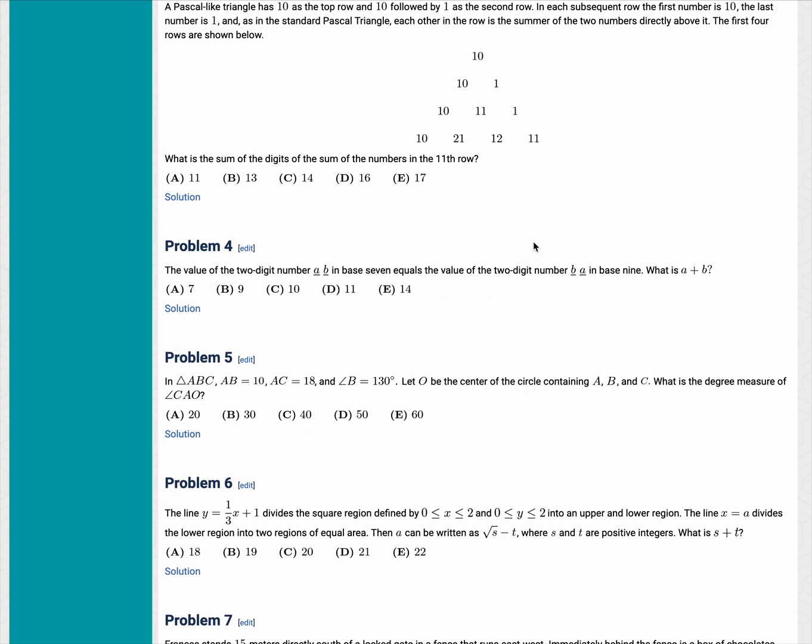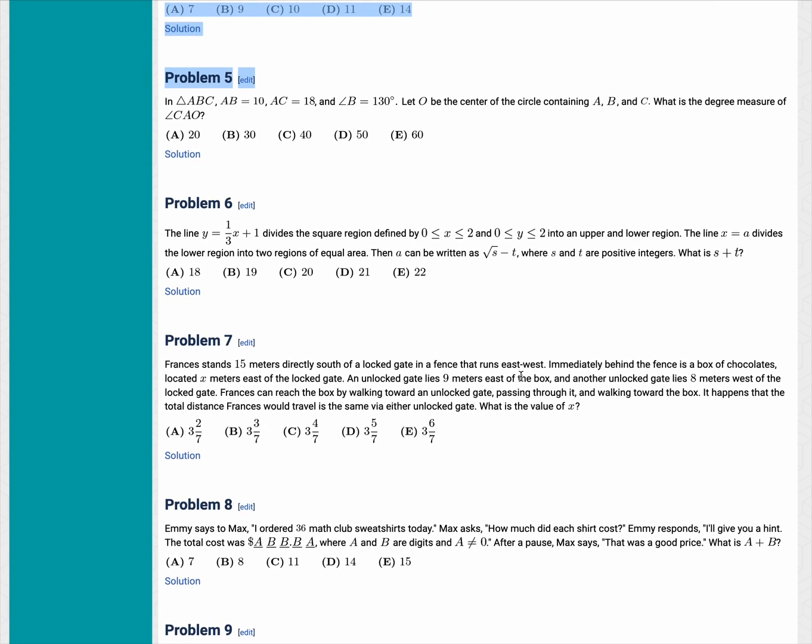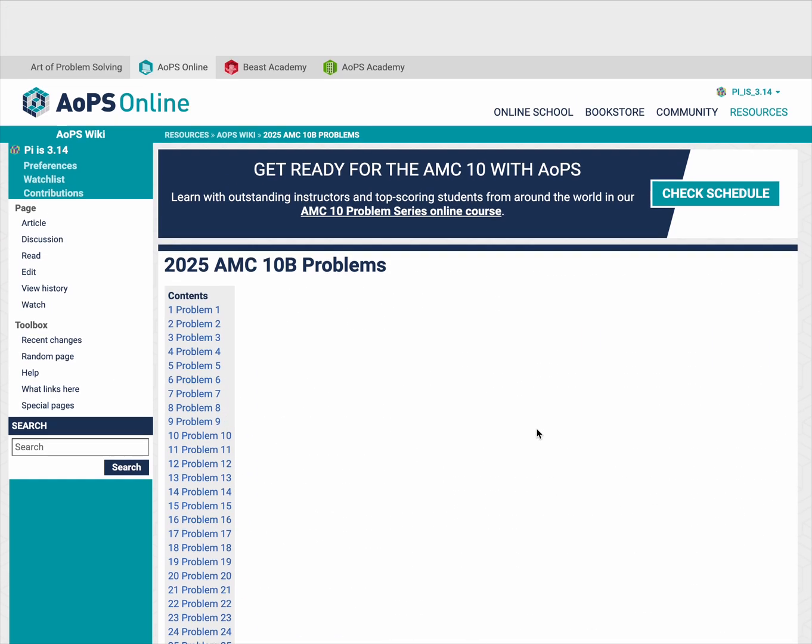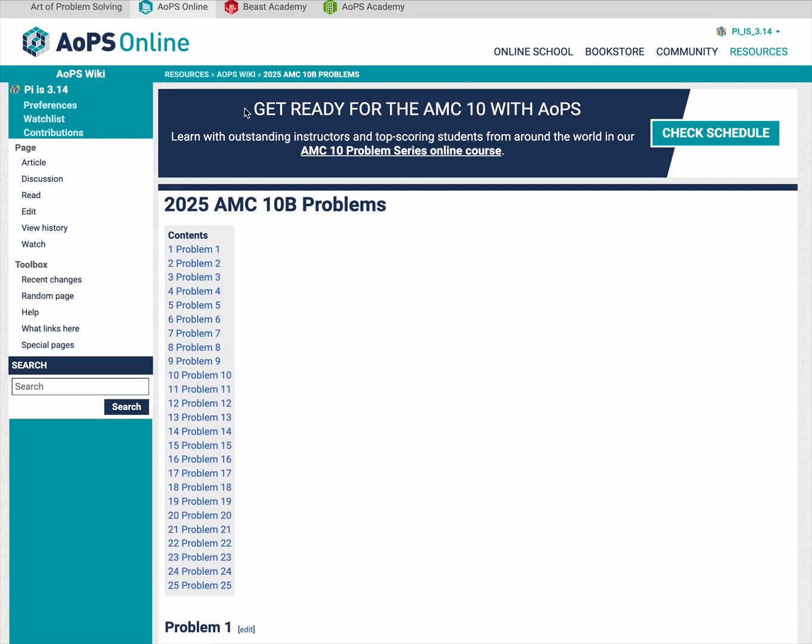So while I did think this was a harder test than the 10A, I predicted 90 for the 10A. I think this one might be slightly higher because of the B effect. So I'll predict a 91.5 for the AMC cutoff for the 10B. Now on to the 12B.